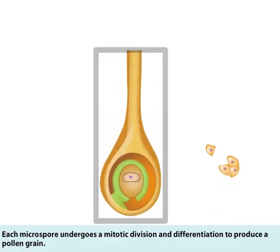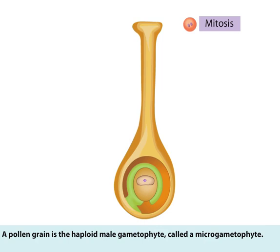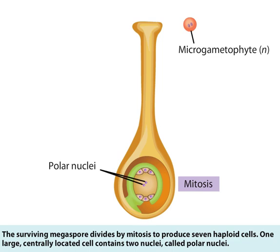Each microspore undergoes a mitotic division and differentiation to produce a pollen grain. A pollen grain is the haploid male gametophyte, called a micro-gametophyte. The surviving megaspore divides by mitosis to produce seven haploid cells. One large, centrally located cell contains two nuclei called polar nuclei.